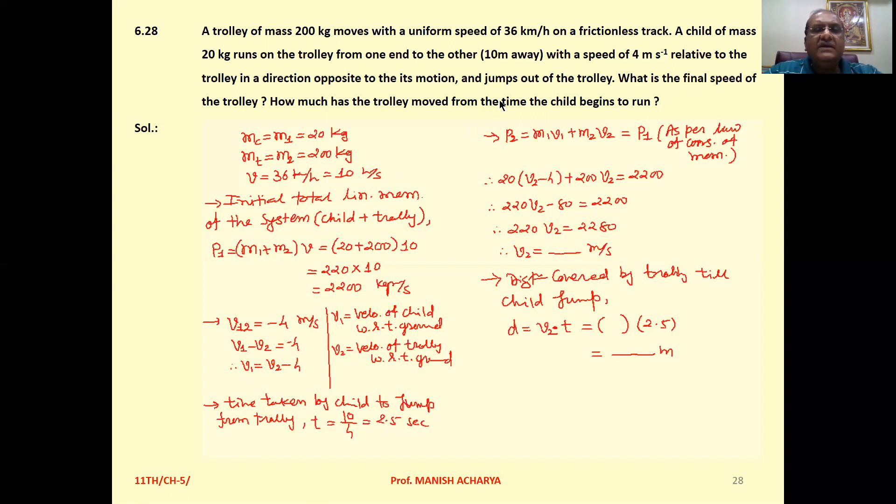Initially, when the child is in the trolley, the entire system is made of two objects: the trolley and the child.